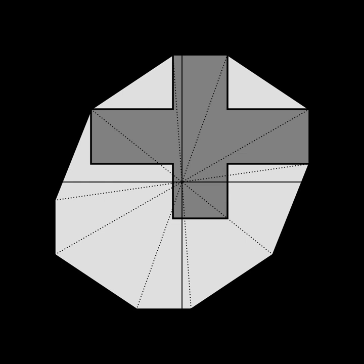A set C in a real or complex vector space is said to be absolutely convex or disked if it is convex and balanced, in which case it is called a disk.